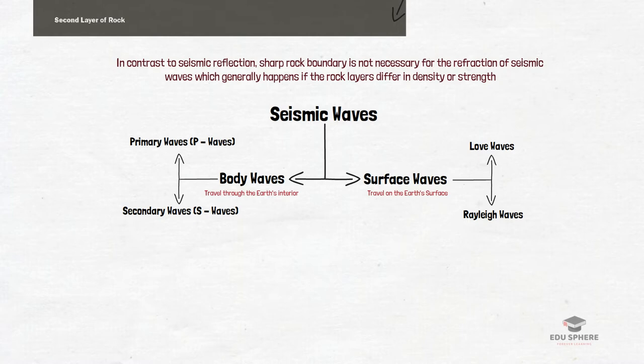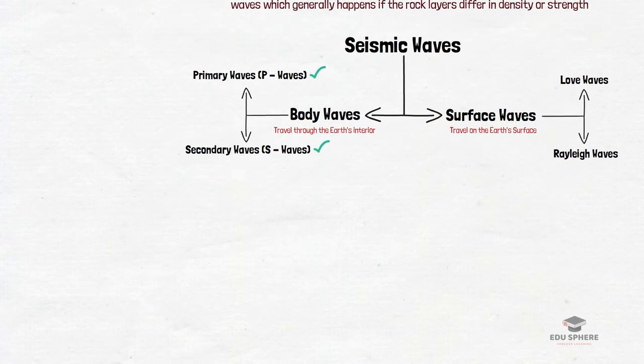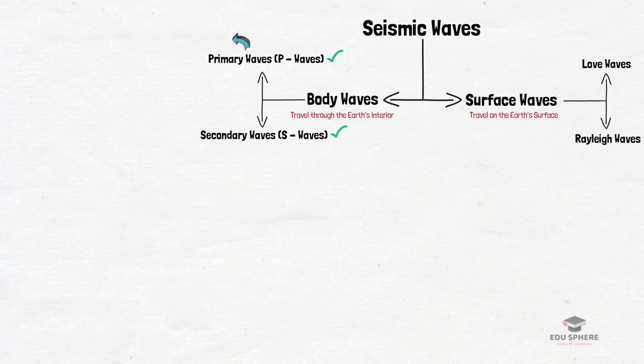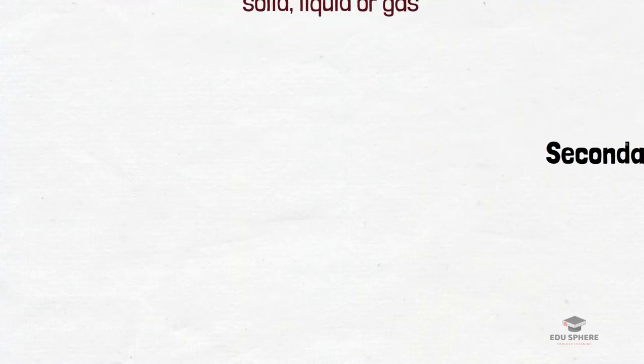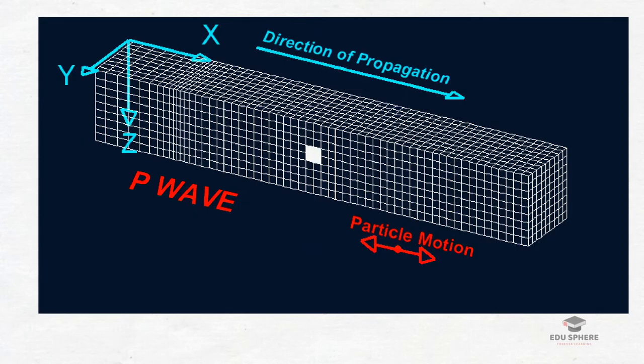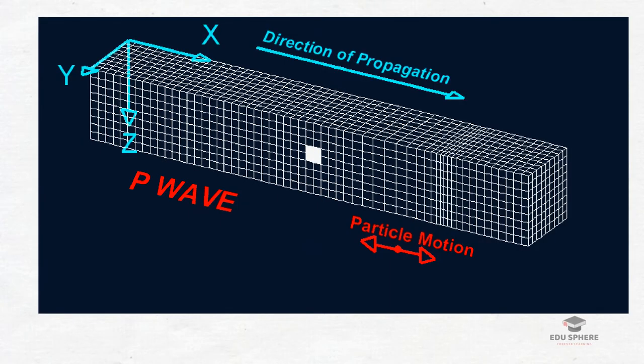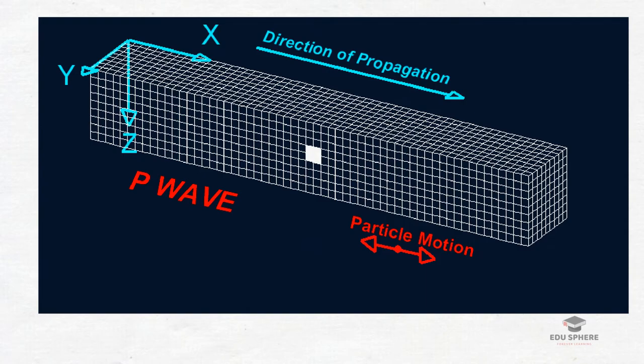The body waves are of two types, the P waves and the S waves. The P waves are called primary waves because they are so fast that they are the first waves to reach an observer at a seismic station after an earthquake occurs. The P wave can move through solid rock and fluids like water or the liquid layers of the Earth. As shown in this picture, it pushes and pulls the rock it moves through.